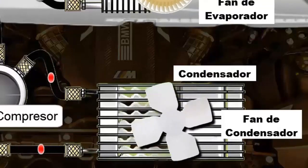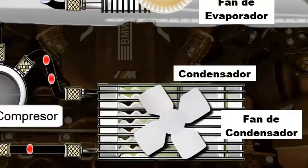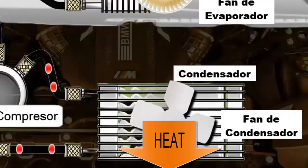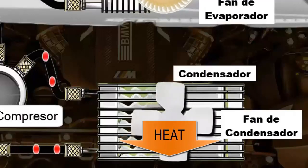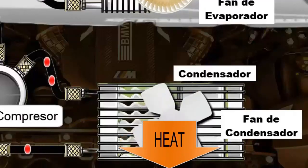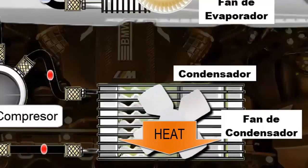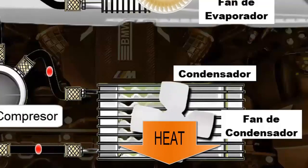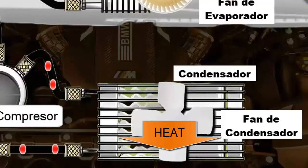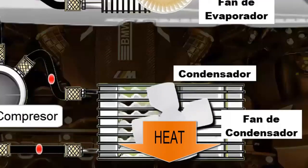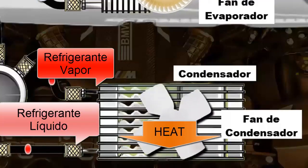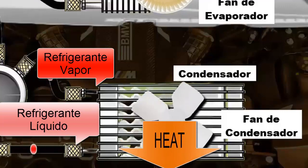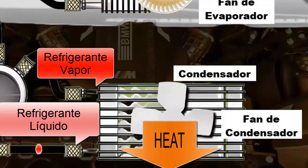The gaseous refrigerant, at high pressure and temperature, moves to the condenser to dissipate the heat gained in the evaporator. The high pressure and temperature acquired in the compressor facilitate the expulsion of heat, allowing the refrigerant to transition from a gaseous to a liquid state.